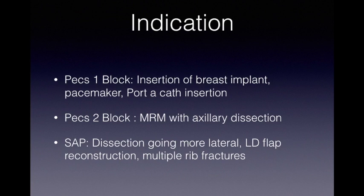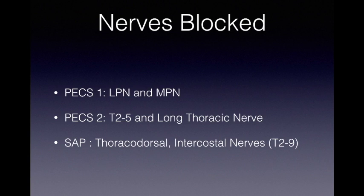The indications for PECS1 block include insertion of breast implant, pacemaker insertion, or port insertion — any surgery requiring manipulation or dissection of the pectoralis major muscle. PECS2 block is used for MRM with axillary dissection to provide analgesia, and also for LD flap reconstruction. Serratus anterior plane catheters are used for multiple rib fractures and give good analgesia when fractures are anterior. With PECS1 you block the lateral and medial pectoral nerves; with PECS2 you block T2 to T4, sometimes T5, and the long thoracic nerve; with serratus anterior plane block you block the thoracodorsal nerve and intercostal nerves up to T2 to T9.